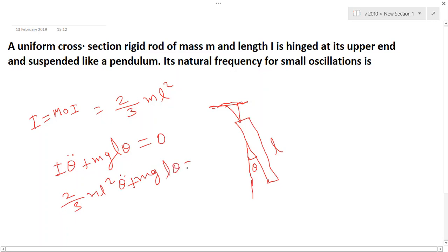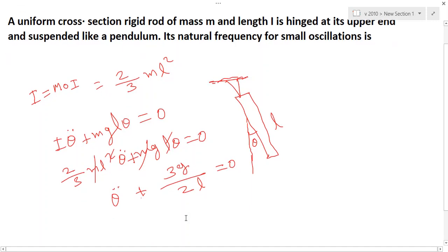m is cancelled out, one l and one l should be cancelled out here. So theta double dot - we can write 3g divided by 2l into theta equal to zero.